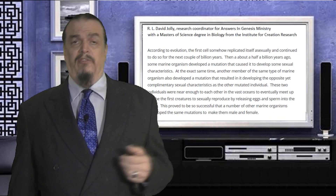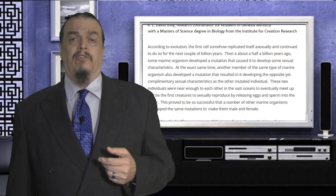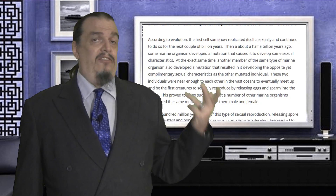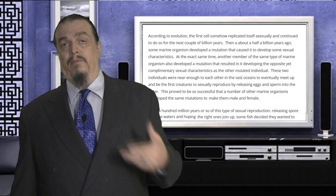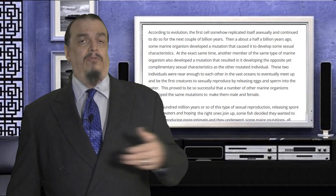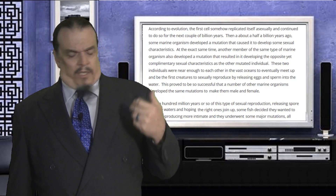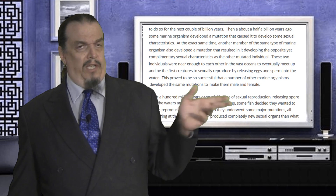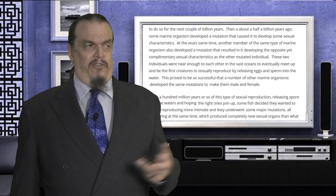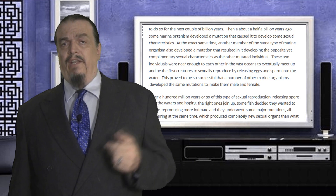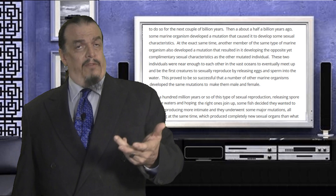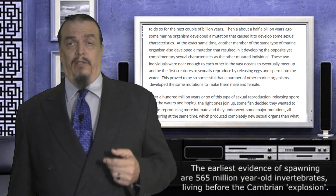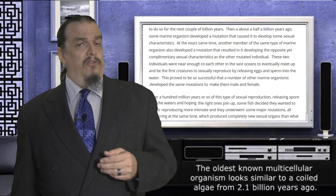Anyway, he goes on to say that this mutation, he imagines, caused the organism to develop some sexual characteristics. At this stage, there are no sexual characteristics, but we'll get to that in a moment. Next he imagines that at this exact same time, another member of the same type of marine organism also developed a mutation that resulted in it developing the opposite yet complementary sexual characteristics as the other mutated individual. So he thinks that evolution suggests that one microbe became male and another one somewhere else became female, with no connection to each other, and that they then needed to find each other in order to reproduce. Worse than that, he goes on to say that these organisms were already multicellular, that they were the first ones to sexually reproduce by releasing eggs and sperm into the water. Eggs and sperm can only be produced by multicellular organisms — we're not there yet.